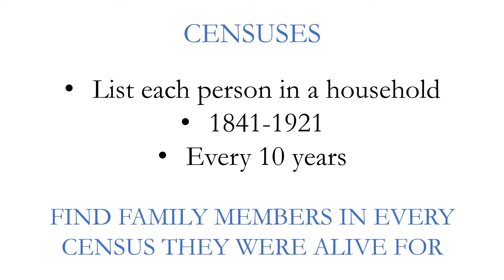England censuses listed every person living in the house on census night, starting in 1841, and we get one every 10 years after that until the 1930s and 40s. To get a good picture of a family you need to find them in every census they appear in — one census is just never good enough. Your goal as a thorough genealogist is to find your research family in every census they were alive for, and don't forget that children may be working away from home — apprentices, teens, or young adults working as servants away from their parents. Find them too.